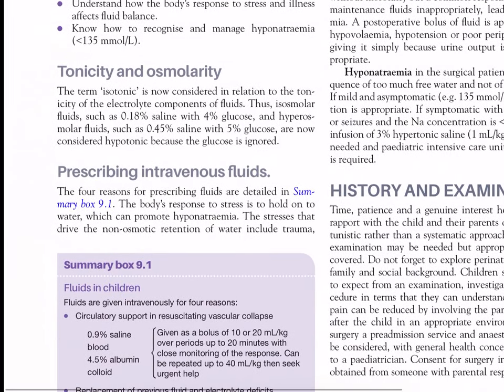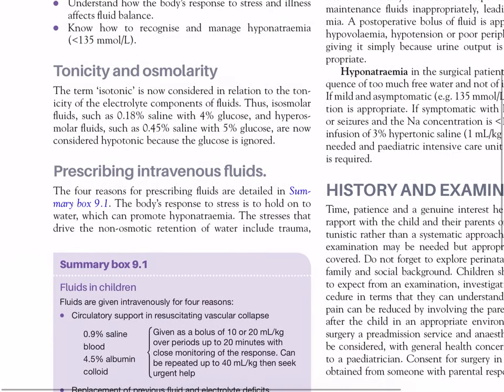Tonicity and osmolarity. The term isotonic is now considered in relation to the tonicity of the electrolyte components of fluid. Thus isomolar fluids such as 0.1% saline with 4% glucose, and hypo-osmolar fluids such as 0.45% saline and 5% glucose, are now considered hypotonic because the glucose component is ignored.